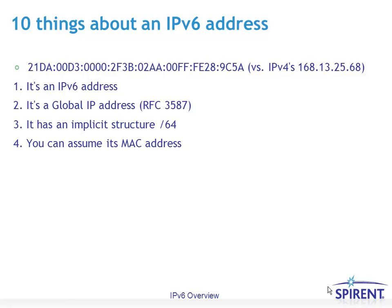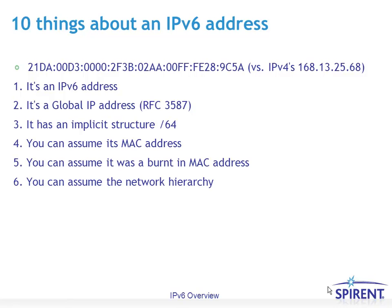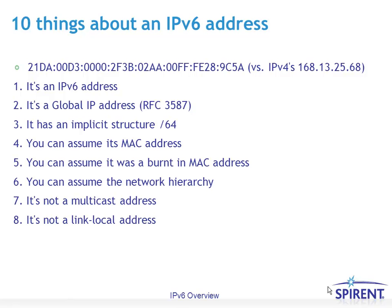You can assume that its MAC address is embedded in its interface portion because there's an FFFE in the middle — but be careful about assuming. You can assume the network hierarchy as described with its implicit structure. It's definitely not a multicast address since it doesn't start in FF, and it's also not a link local address since it doesn't start in FE80.